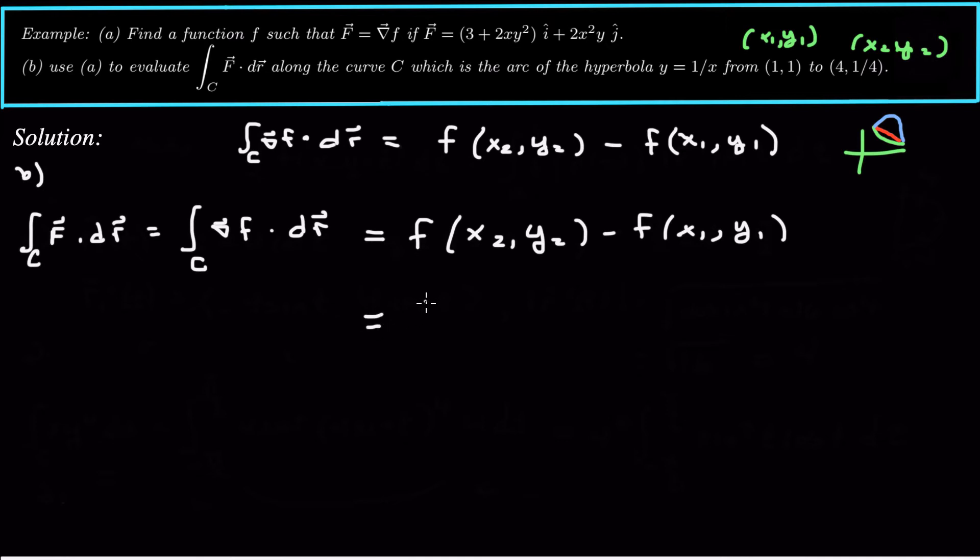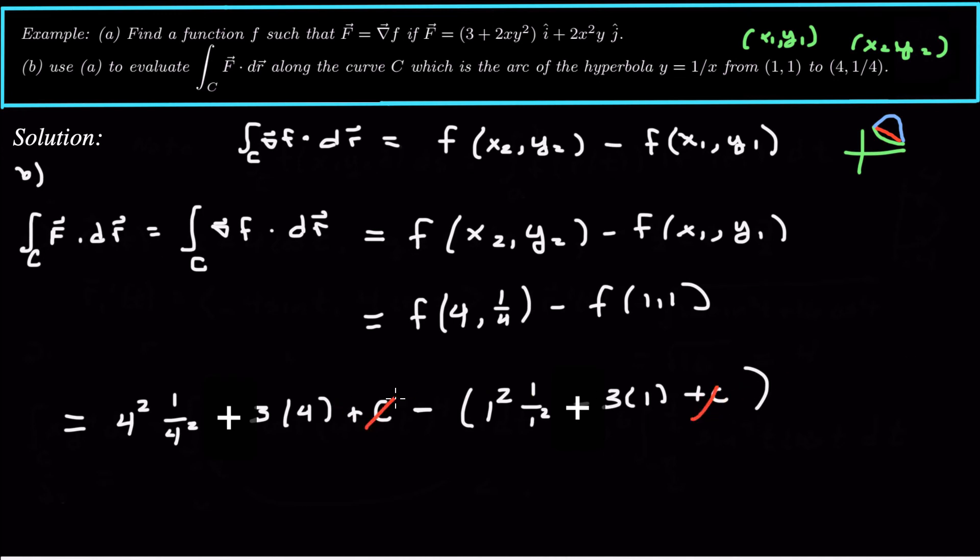So this is going to turn into f of 4, 1 quarter, minus f of 1, 1. And now I plug those into my function that I just found. And my function was x squared y squared. So that's going to be 4 squared times 1 over 4 squared, 3 times 4. And that's the function evaluated at this first point, plus c, minus the function evaluated at 1, 1. So that's going to be 1 squared times 1 over 1 squared, minus 3 times 1, plus c. And now I have some nice cancellations here. The c cancels. And then we just have some numbers here. We have 16 times 1 over 16, which is 1.